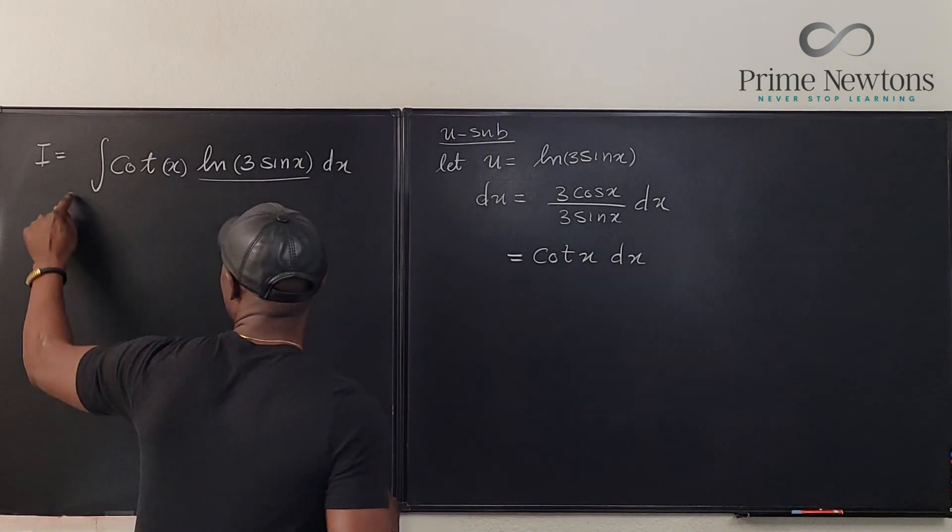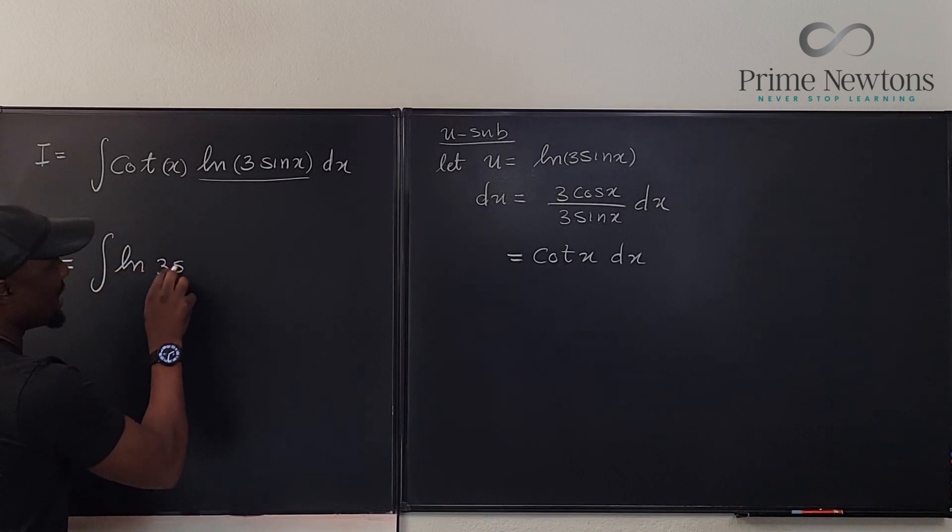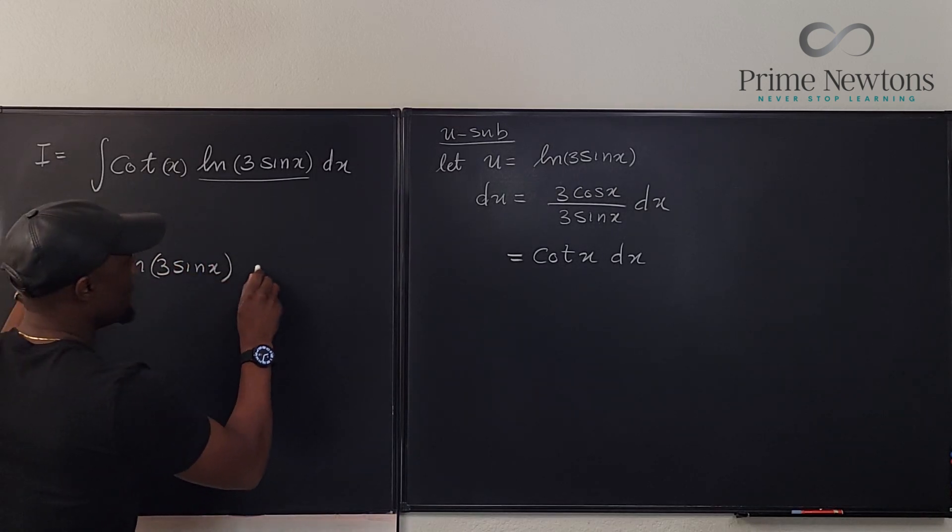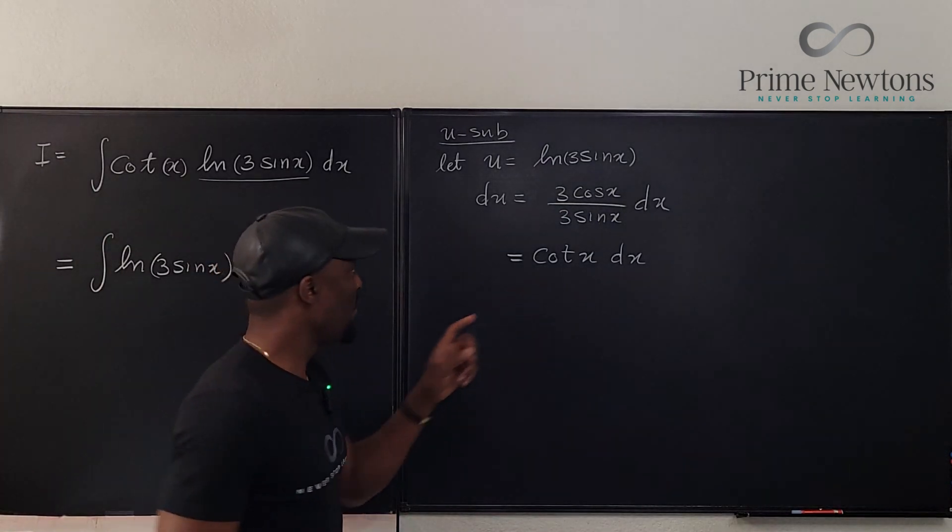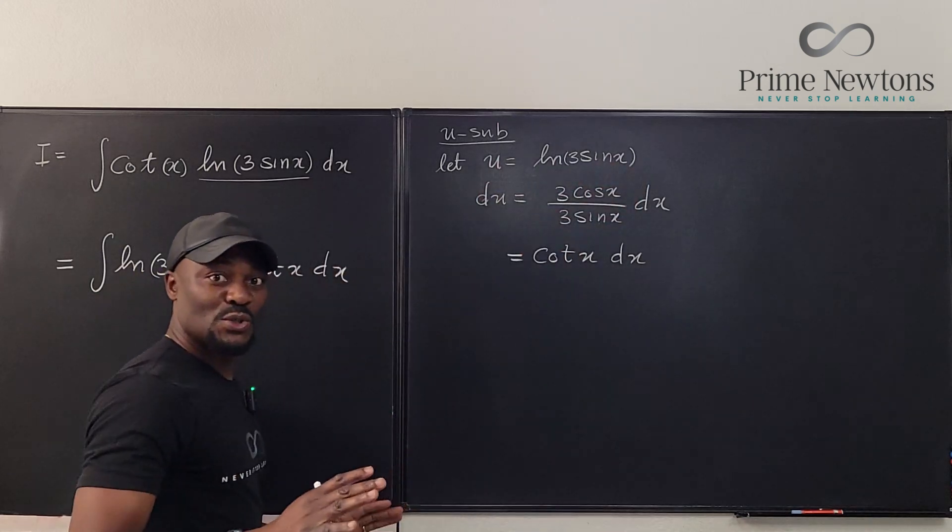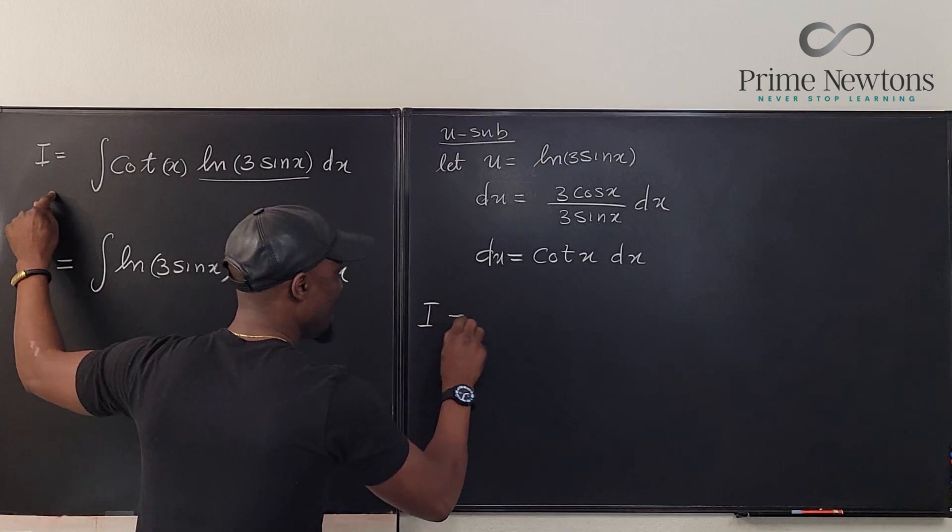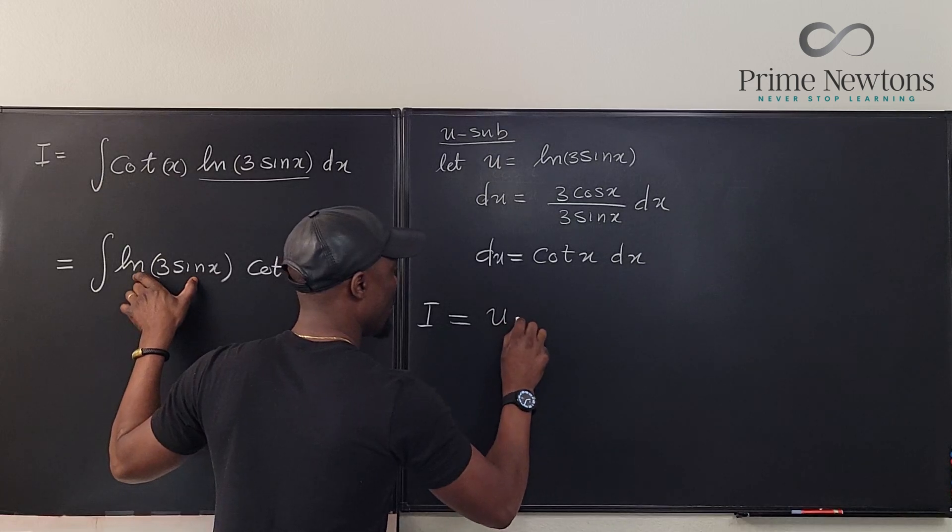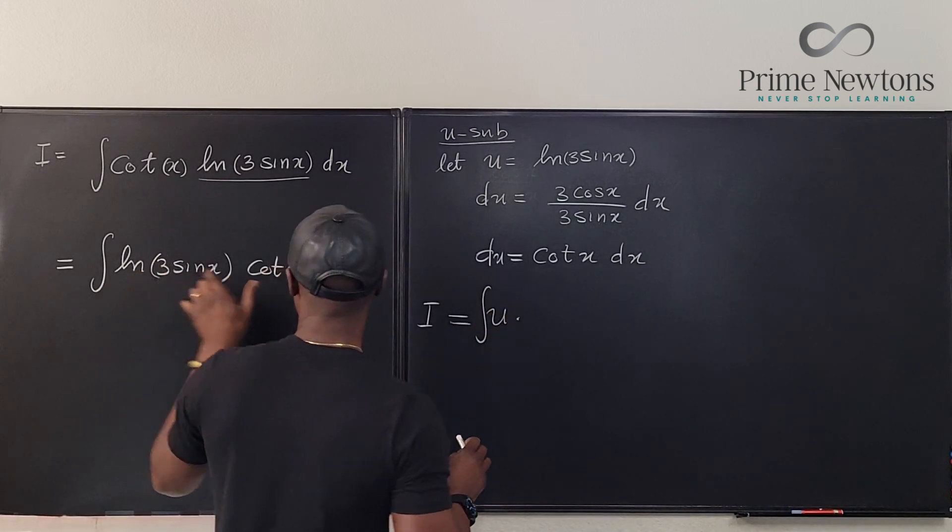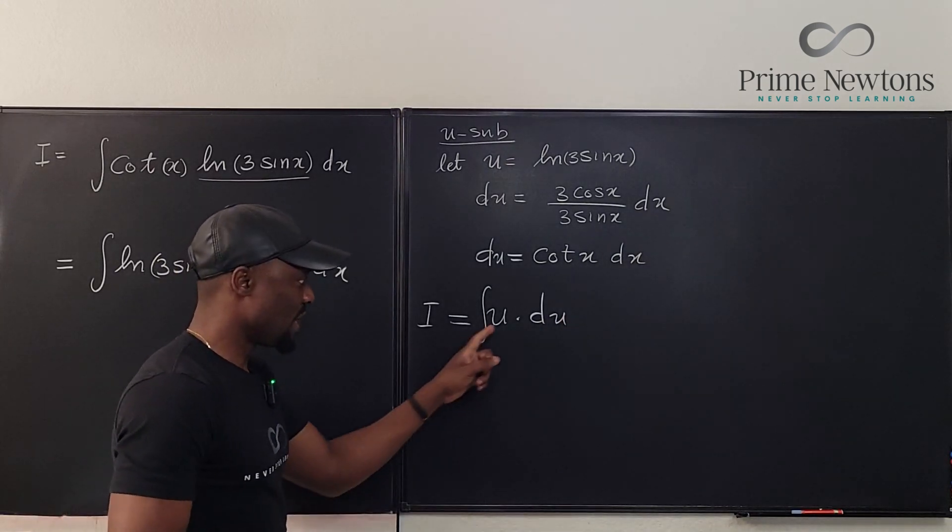So you see that this integral here could have been written as the integral of ln of 3 sin x times cotangent x dx, which is what we have here. Based on this u-substitution, this is our du, so the integral I is equal to the natural log, which is our u, multiplied by cotangent x dx, which is just du.